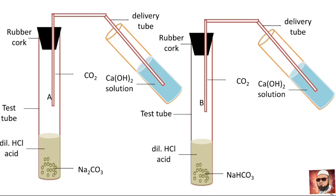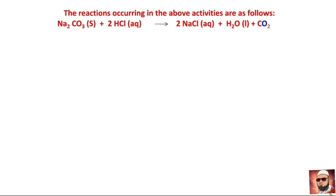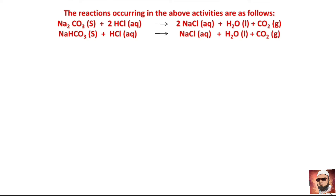The reactions occurring in the above activities are as follows: sodium carbonate (Na₂CO₃) plus hydrochloric acid (HCl) gives sodium chloride (NaCl) plus water (H₂O) plus carbon dioxide gas (CO₂). Similarly, sodium hydrogen carbonate (NaHCO₃) reacts with hydrochloric acid to give sodium chloride, water, and carbon dioxide gas.